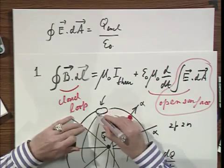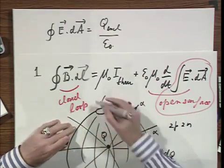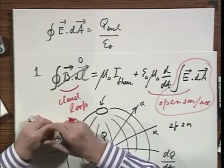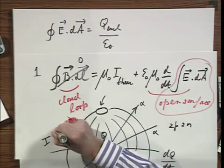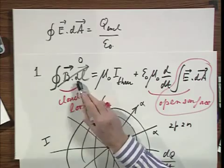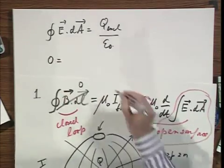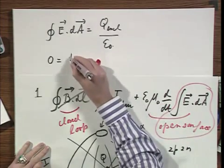If I make this loop zero, then this term becomes zero. And so what I have now is that zero equals, forget the mu zero, I lose that on both sides.